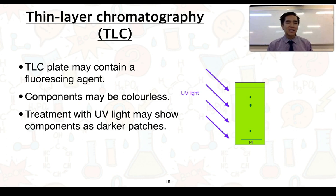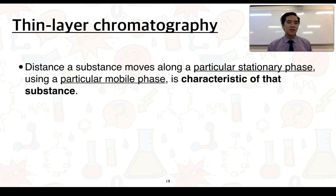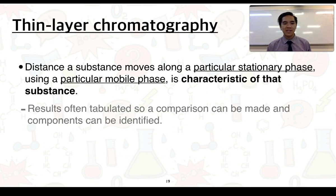Sometimes TLC plates may contain a fluorescing agent, because components could be colourless and we wouldn't be able to see how far they've travelled. Treatment with UV light may then show these components appearing as dark patches. In conclusion, the distance a substance moves along a particular stationary phase using a particular mobile phase is characteristic of that substance. Results are often tabulated so comparisons can be made to identify which components are present — and this is applicable to all chromatography techniques, not just TLC.